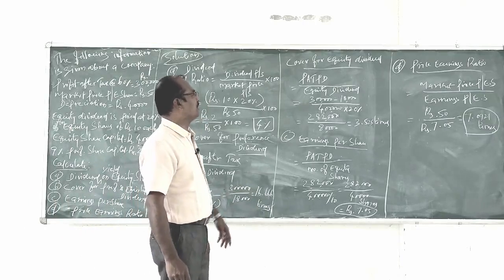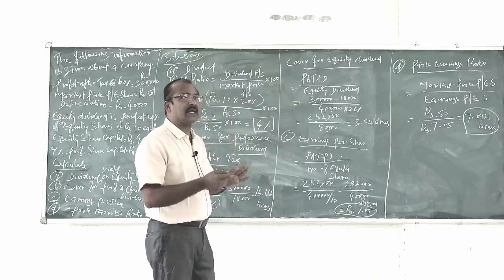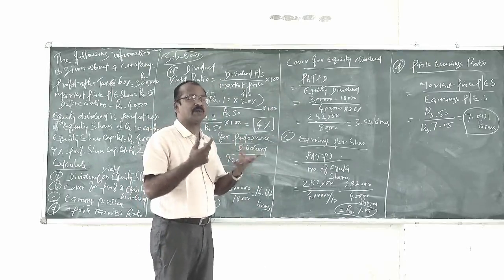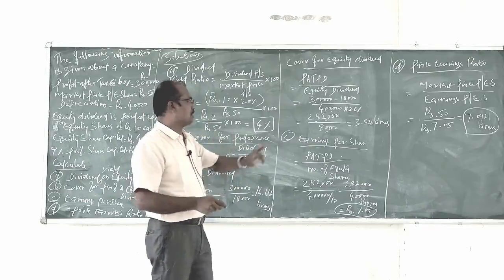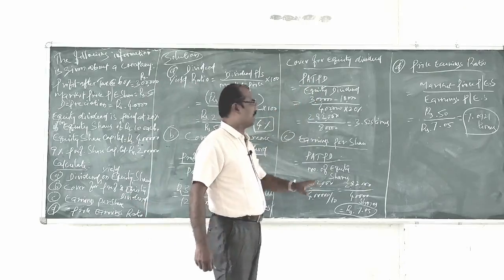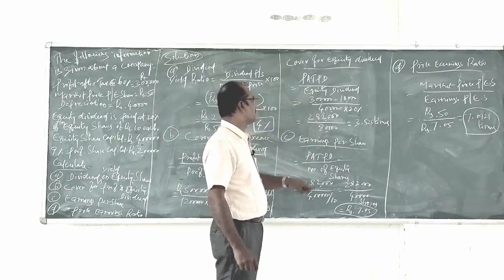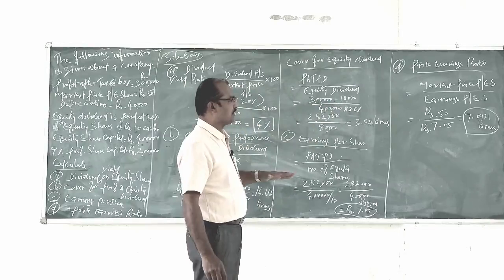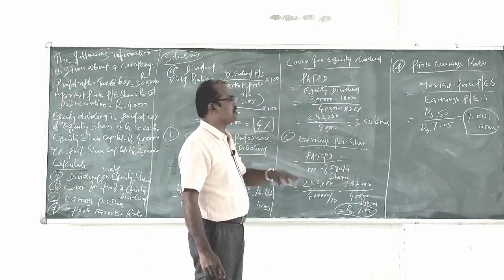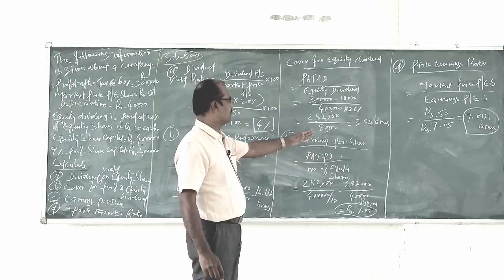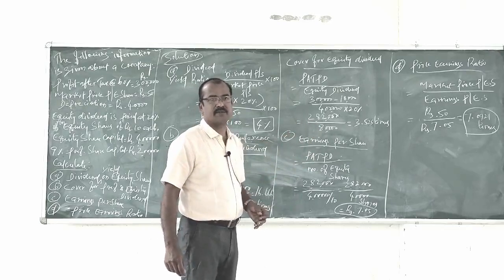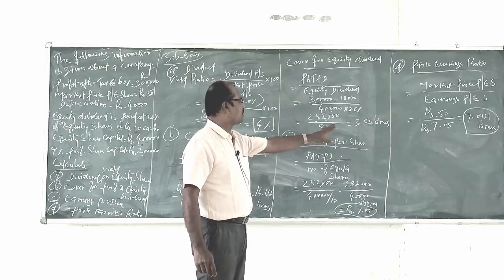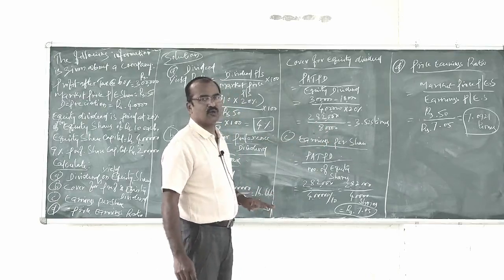Next is cover for equity dividend. Equity dividend will be calculated only out of the profit after tax minus preference dividend. So profit after tax and preference dividend divided by equity dividend: 3 lakhs minus preference dividend of 18,000 comes to 2,82,000. Equity dividend is 40,000 shares into Rs. 10 into 20% = Rs. 80,000. Therefore, 2,82,000 divided by 80,000 equals 3.525 times. The company earns a profit of 3.525 times the equity dividend to be paid.